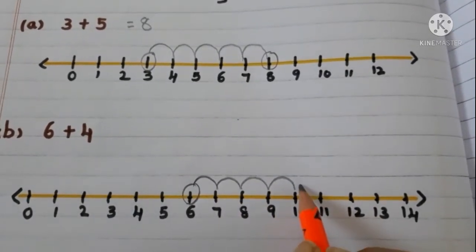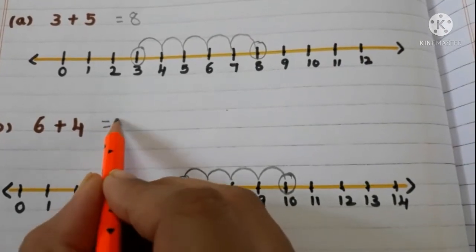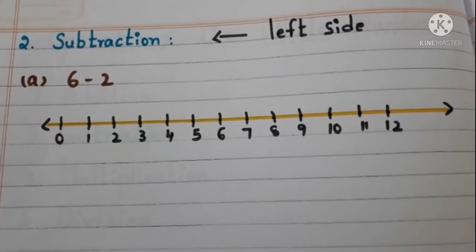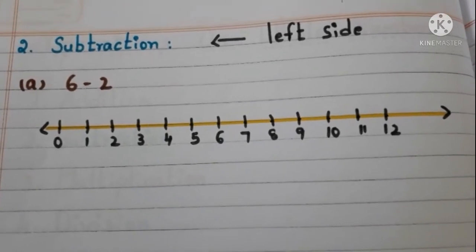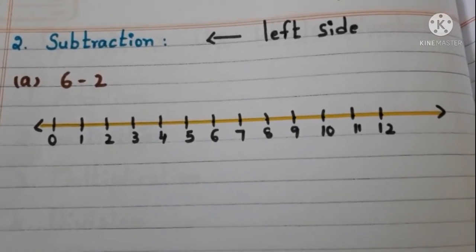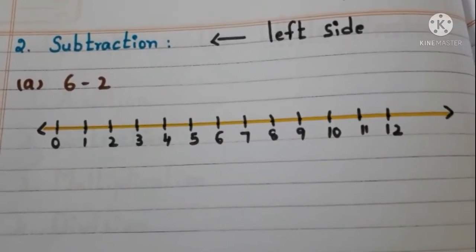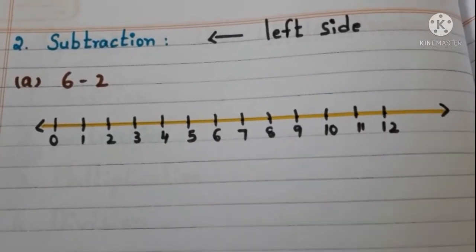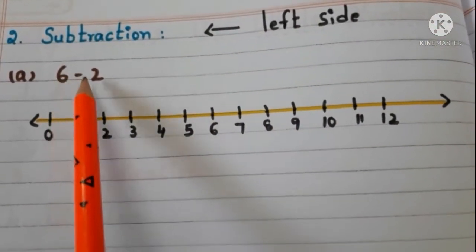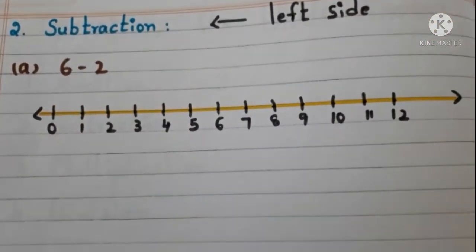Now let us move to subtraction. When we want to subtract one number from another by using a number line, we have to move to the left side on the number line. Let us see with an example — here we have 6 minus 2. What is the first number? 6. So we have to start at 6.